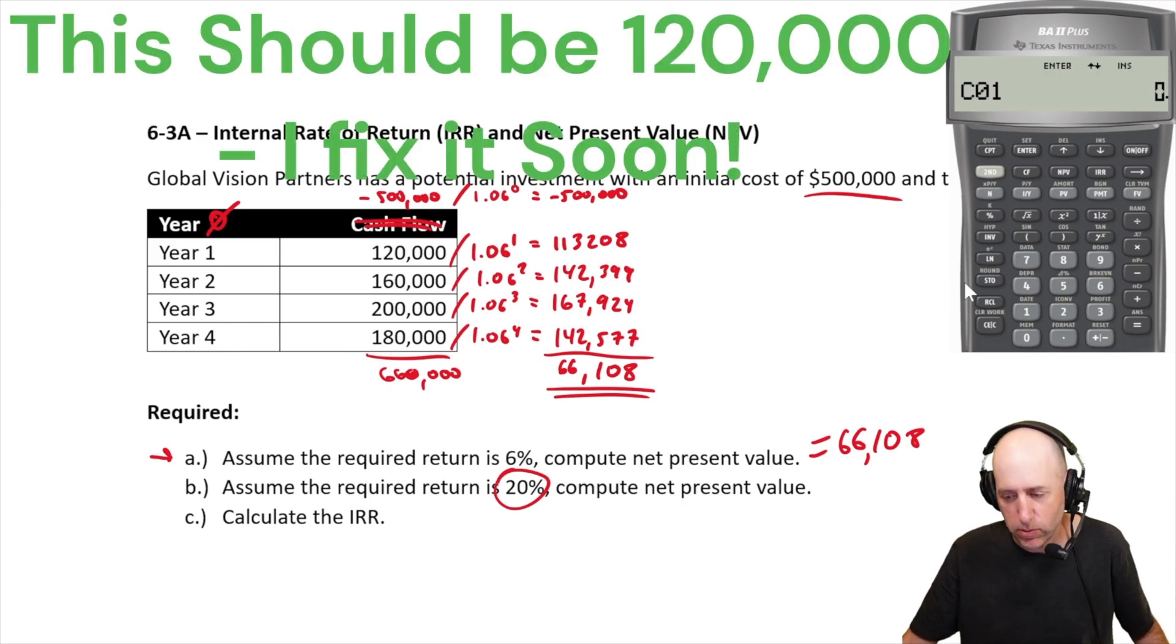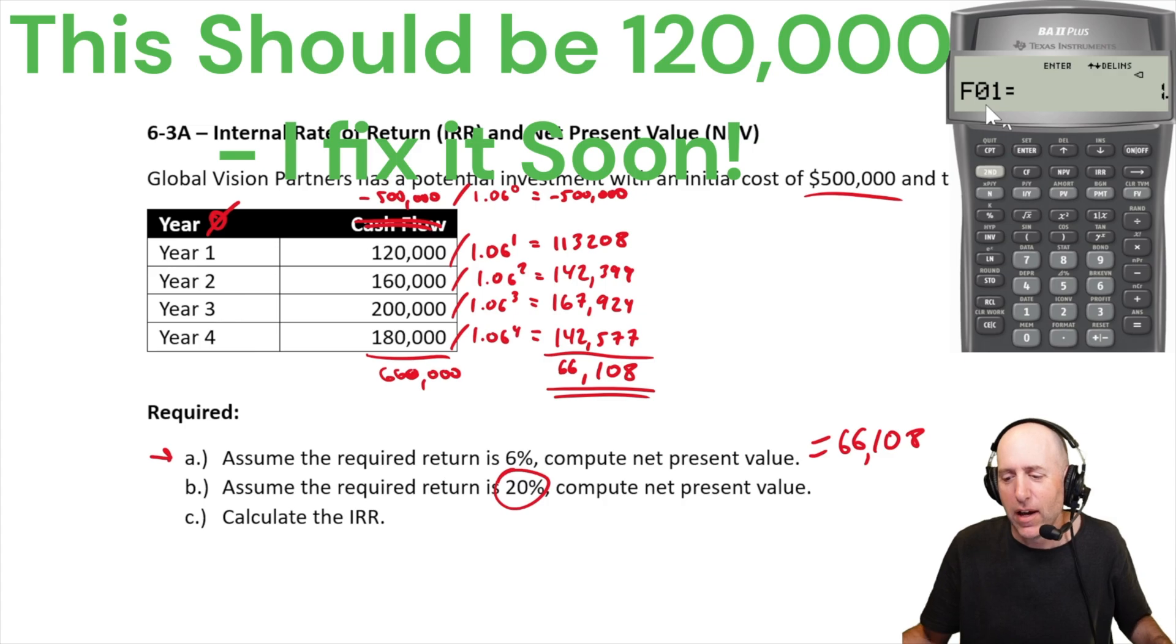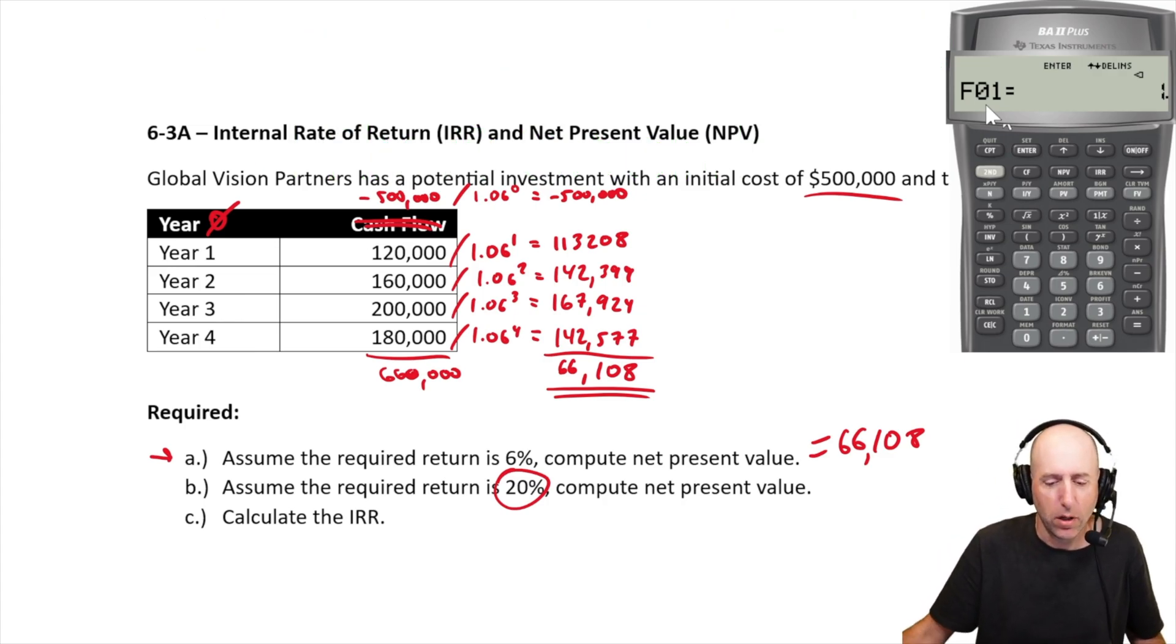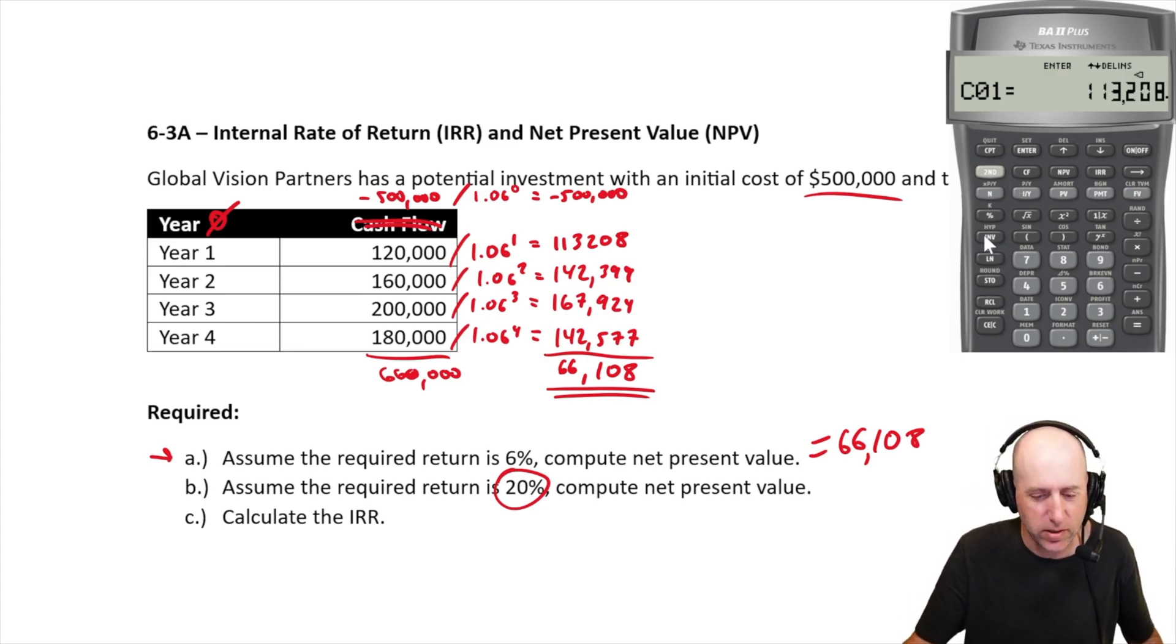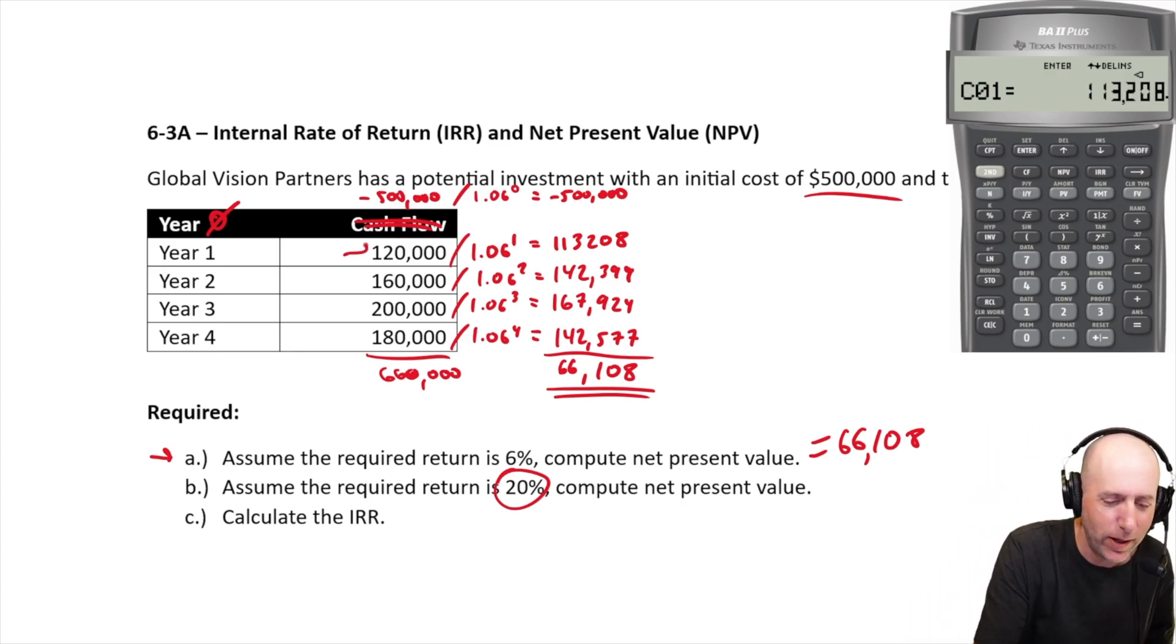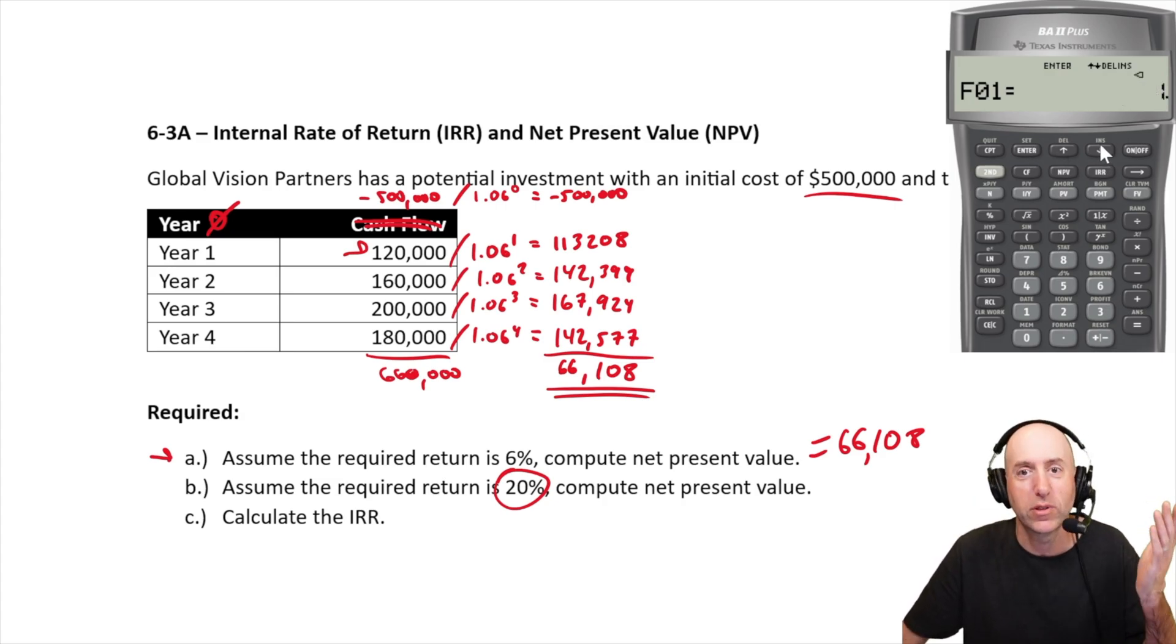Cash flow at time 1. 1, 1, 3, 2, 0, 8. 1, 1, 3, 2, 0, 8. I hit enter. I hit the down arrow. F01 is, what's the frequency? If you've got, like, an annuity with, like, 15 cash flows at this point, you could enter 15. But we only have, oops, I did the wrong number. Oh, my gosh. Let's go back up. Cash flow at time 1 is not 1, 1, 3, 2, 0, 8. It's 1, 20. I discounted it already. Sorry. I'm glad I caught that. 1, 2, 0, 0, 0, 0. Enter. So, there's my cash flow at time 1.